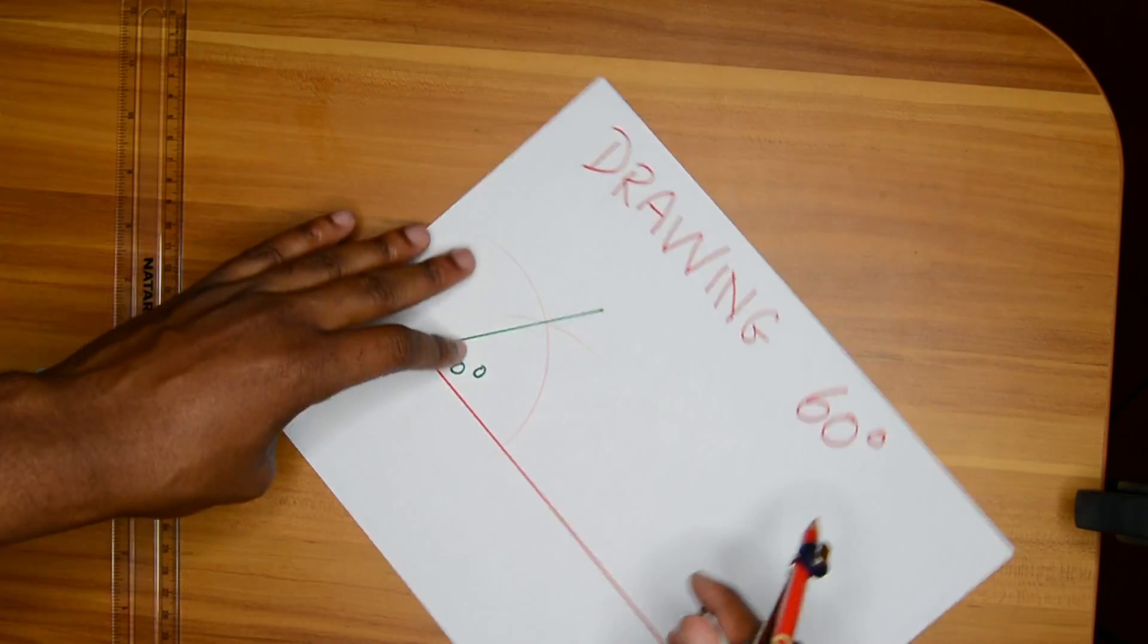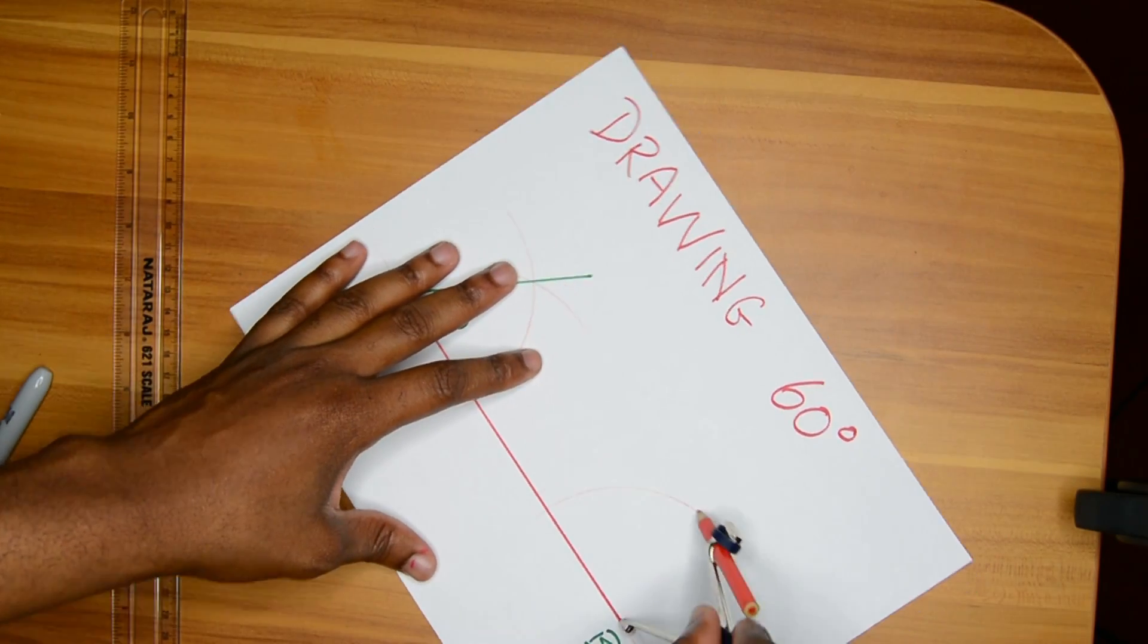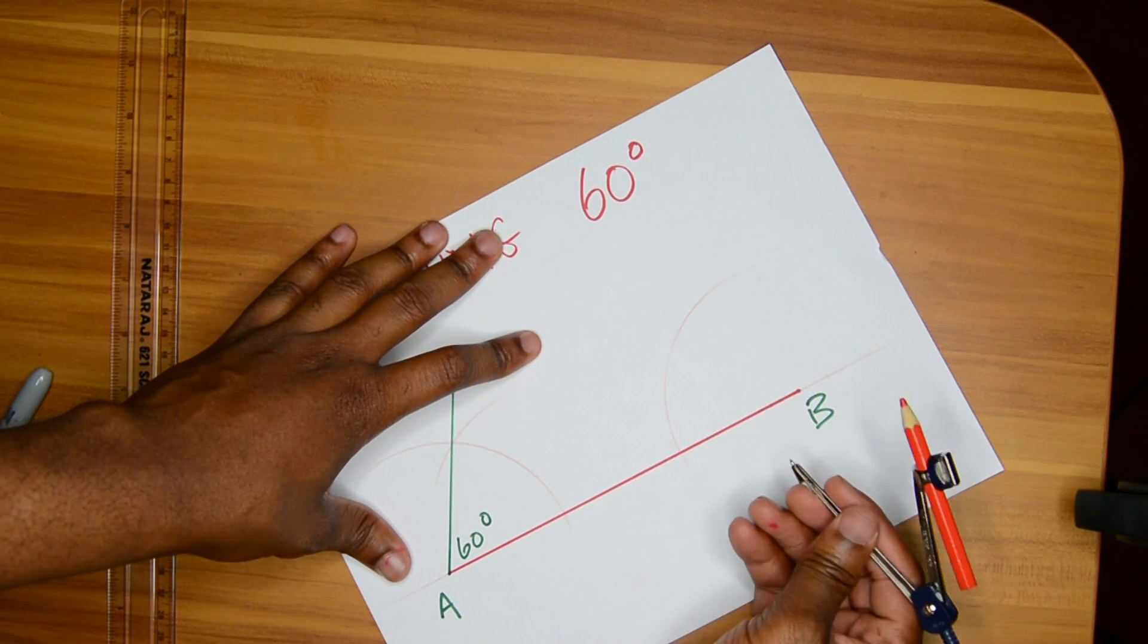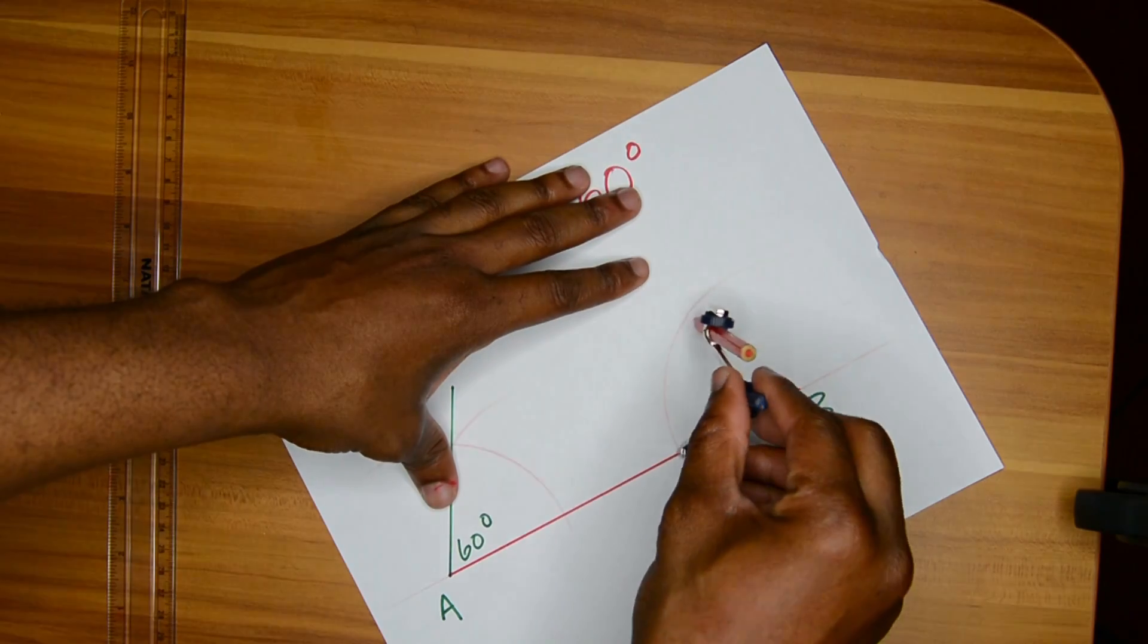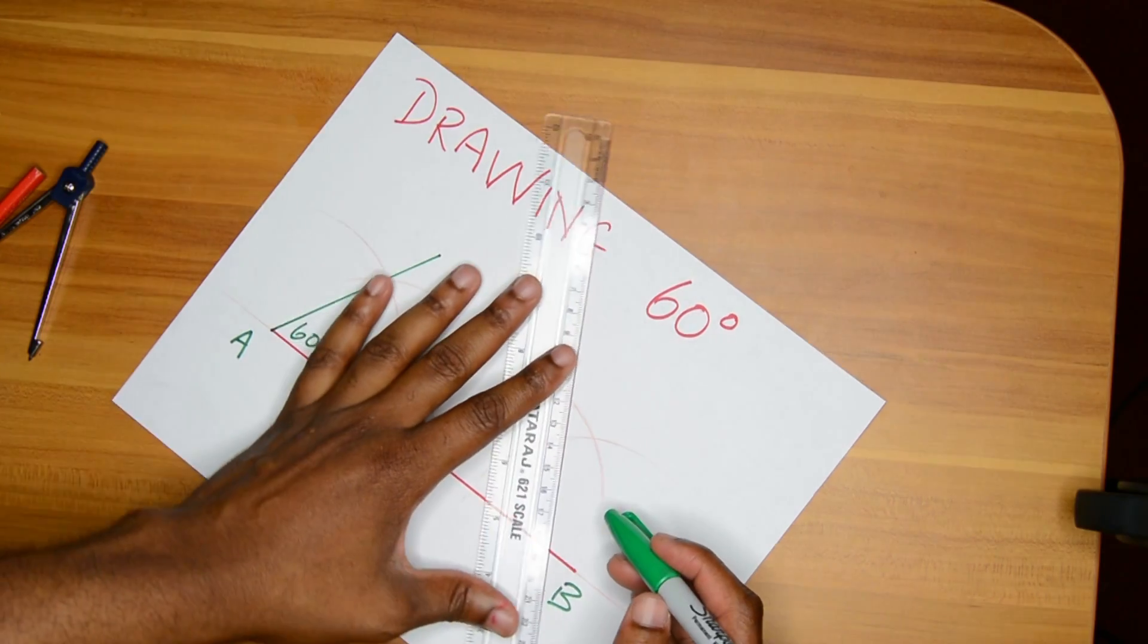All right, so it's easy to do one at B now. Open your compass to a length, draw an arc, it's a two arc process, then come at where you cut the baseline here, draw next arc, and where the two arcs intersect is our 60 degrees.